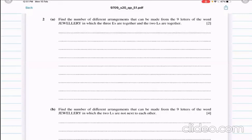Question number 2 is from this paper, Summer 20 or Reorient 1. Find the number of arrangements that can be made from the 9 letters of the word JEWELRY